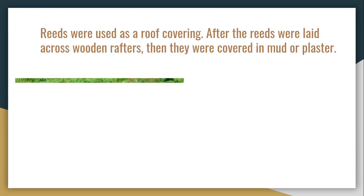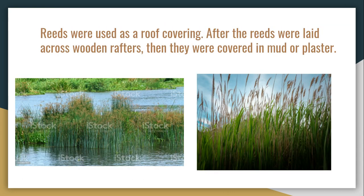Another common building material was reeds. Reeds are tall, thick grasses found in swamps or wetlands. Reeds were laid across the roof joists of some houses to create a foundation for plaster or mud coverings. The picture shown here — noted as an iStock photo — is actually reeds in the Nile River.